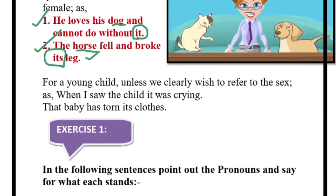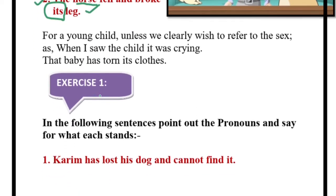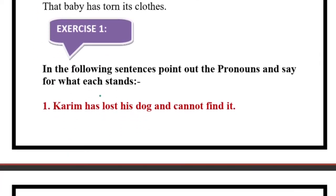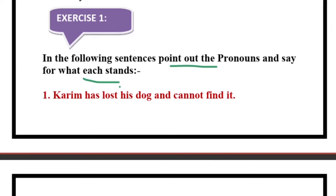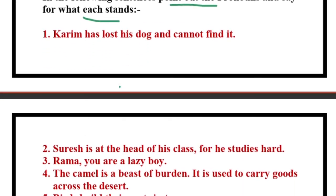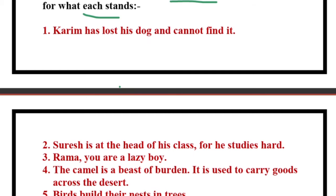Now, if we come to Exercise One — what do you find? It is a very easy exercise. In the following sentences you have to point out the pronouns and say what each stands for — for example, whether it is the personal pronoun or the possessive pronoun, since that is what we have done so far.